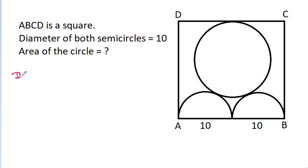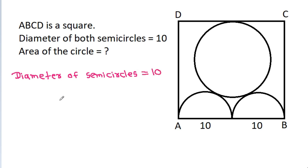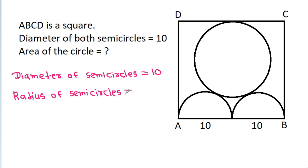The diameter of the semicircles is 10, so the radius of the semicircles will be equal to 10 divided by 2, that is 5.